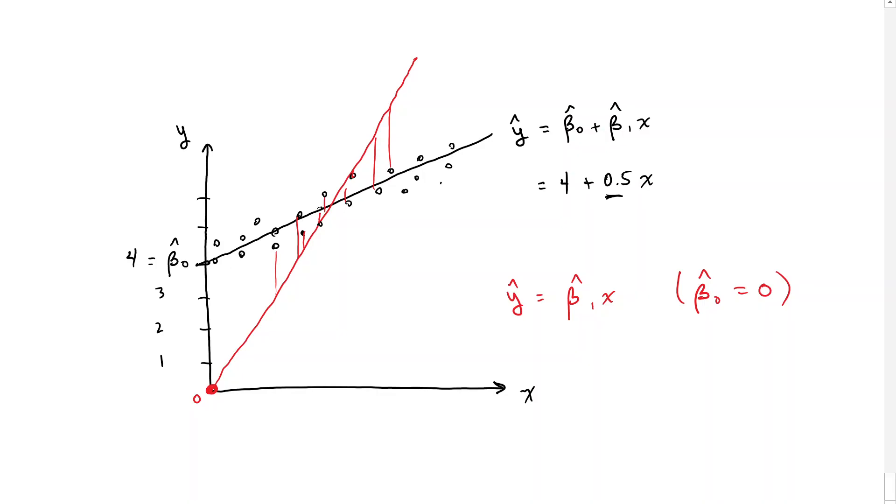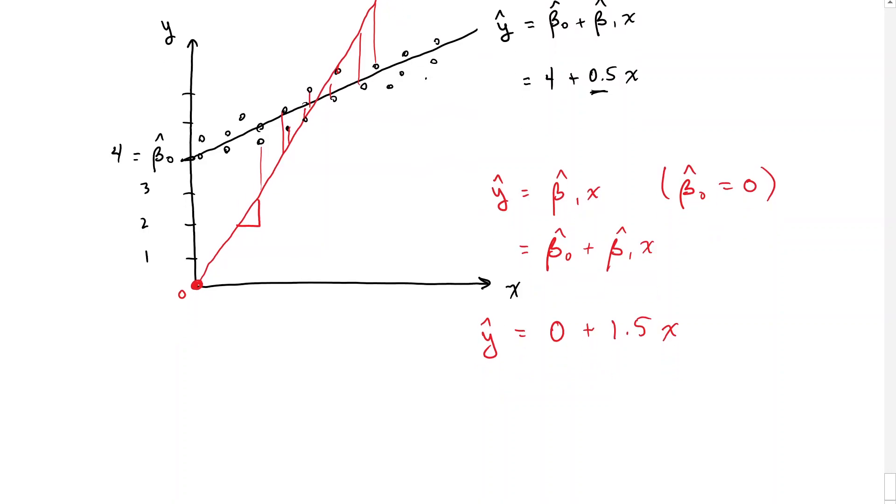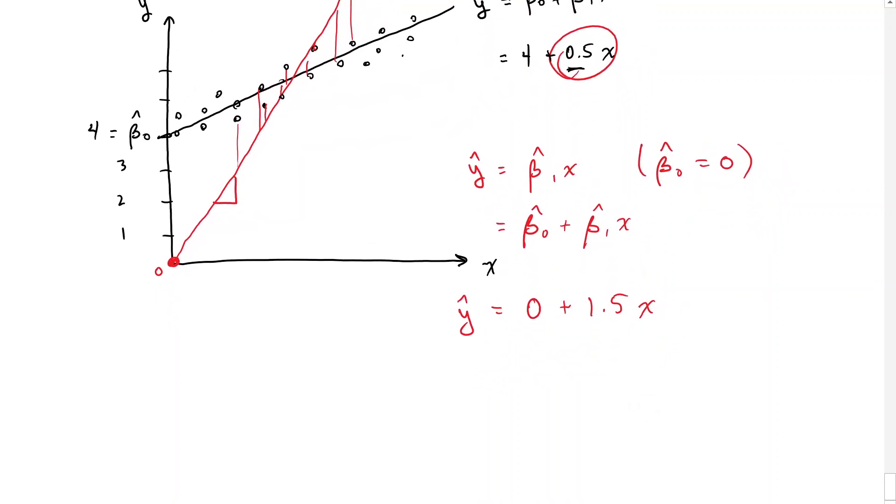But if we estimate that, we can see that beta zero plus beta one x is equal to zero. But now beta one, the slope is much, much larger. And let's say that's instead of 0.5, that could be 1.5 times x. So we're going to estimate our outcomes y hat as 1.5 times x, but the true value is 0.5.